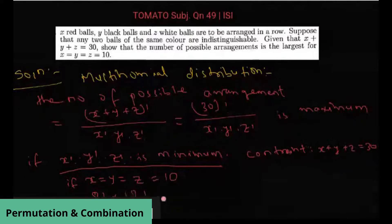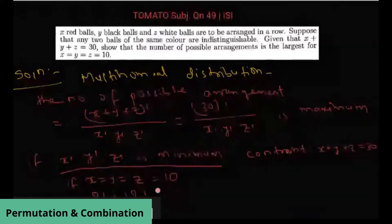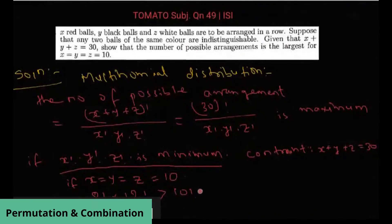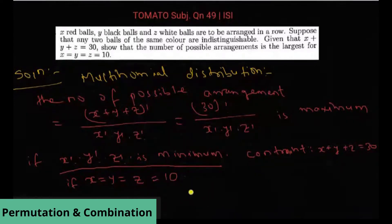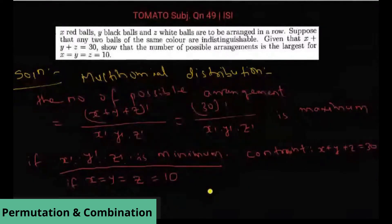This thing will always be greater than 10 factorial times 10 factorial because you can see that this is 9 into 10 and this will be 11 into 12. The product is always multiplied by the greater number, so this is how the question is proved. Thank you.